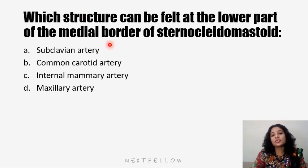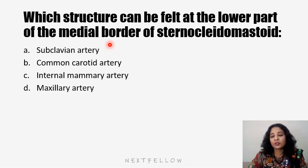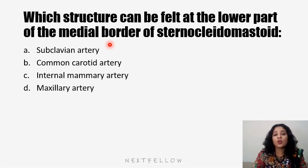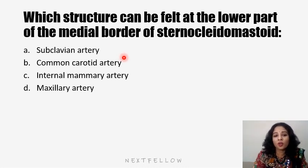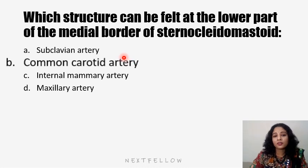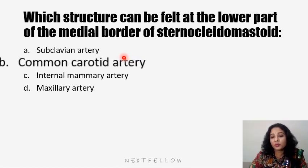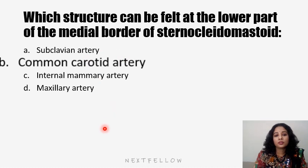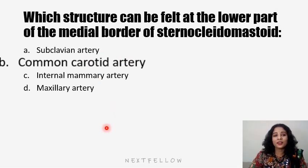Which structures can be felt in the lower part of the medial border of the sternocleidomastoid? At the lower part of the medial border, we can feel the pulsations of the common carotid artery, which is pressed against the transverse process of the C6 vertebra. This completes the sternocleidomastoid anatomy.